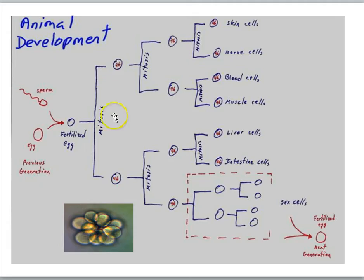But here's the puzzle then. We know that mitosis duplicates chromosomes, so the daughter cells have identical sets of chromosomes. Yet somehow cells with identical sets of chromosomes are becoming different.